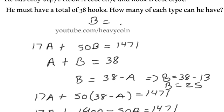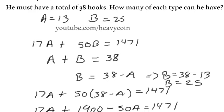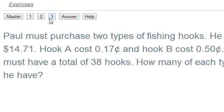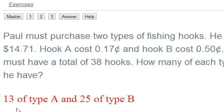B is 25 and A is 13 hooks. So that's what we can purchase with the money that we have, subject to our constraints, which is we can have 38 hooks. This comes from our webpage: 13 of type A and 25 of type B. So on all these types of problems, we're setting up two equations and two unknowns. This is pretty much how you're going to do it.